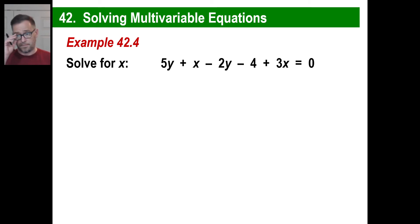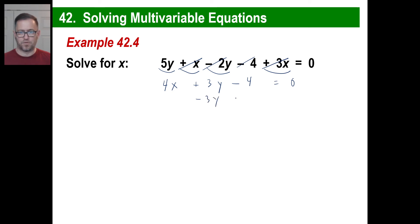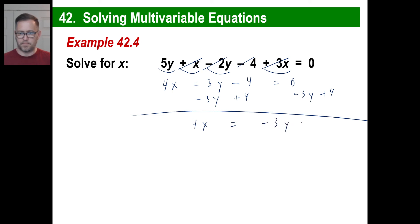And let's solve for x. First off, let's get these x's together — we have an x and a plus 3x, so we're going to have a 4x on this side. Then I look at 5y and minus 2y — that gives me 3y minus 4. And that's going to equal 0. Now what do we need to do? We do minus 3y plus 4 on both sides. So I have my 4x, my negative 3y, and my plus 4 — and the last step is divide by 4.